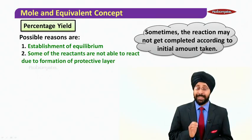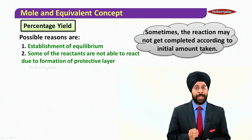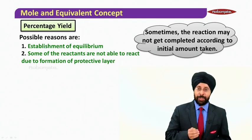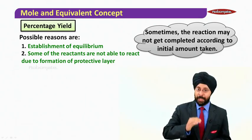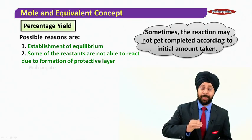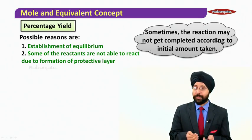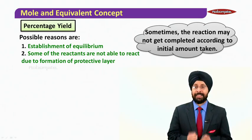Now for the second reason, some of the reactants are not able to react due to formation of a protective layer. Suppose we have a solid and a liquid that reacts with the surface and then covers it up. Now the remaining solid cannot react. And therefore, we will not get the actual amount that we are expecting.